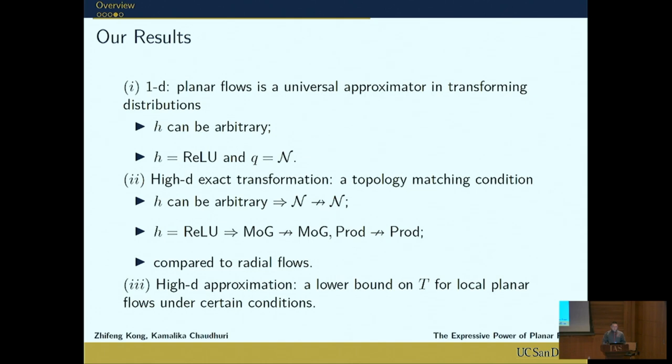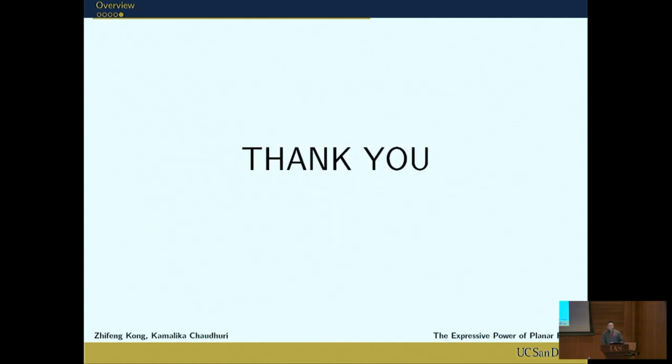For the approximation question, we developed a lower bound on the number of layers t for local planar flows, which is a specific kind of planar flows, including non-linearities like tangent h or sigmoid. And this is like the first lower bound in this area. That's it. Thank you. If you're interested, please come to my poster or come to me. Thanks.